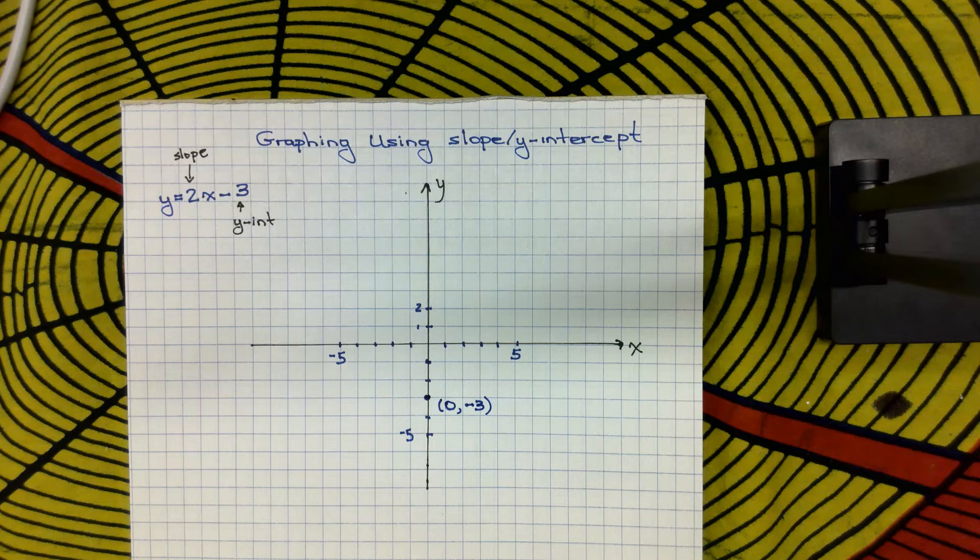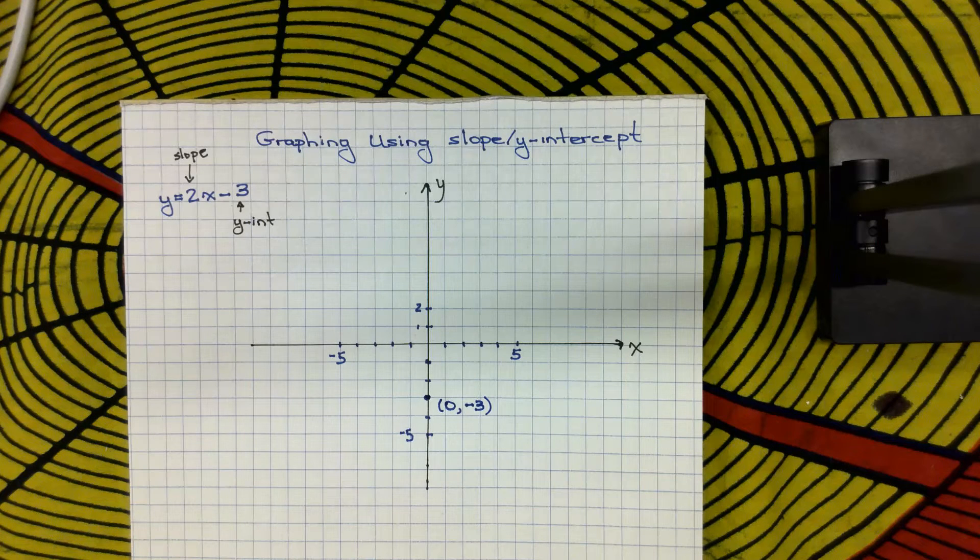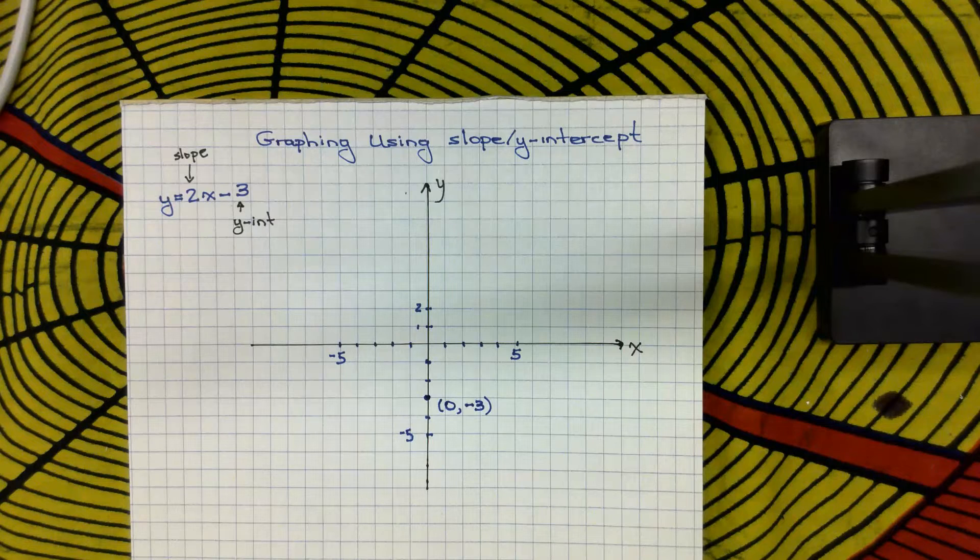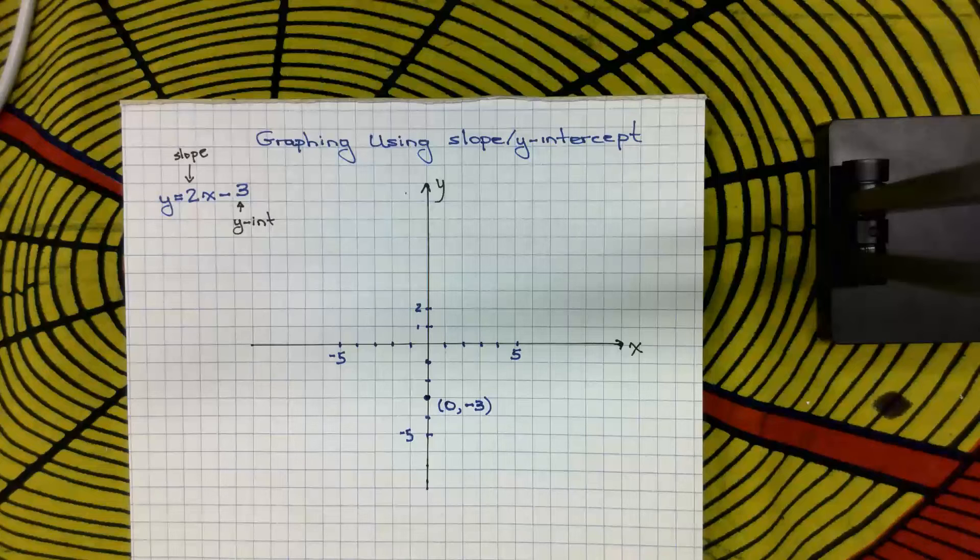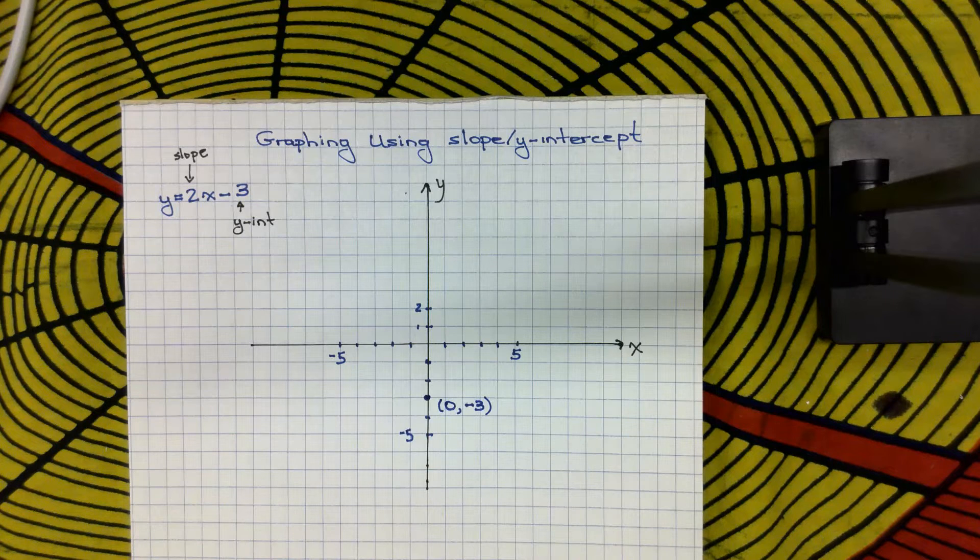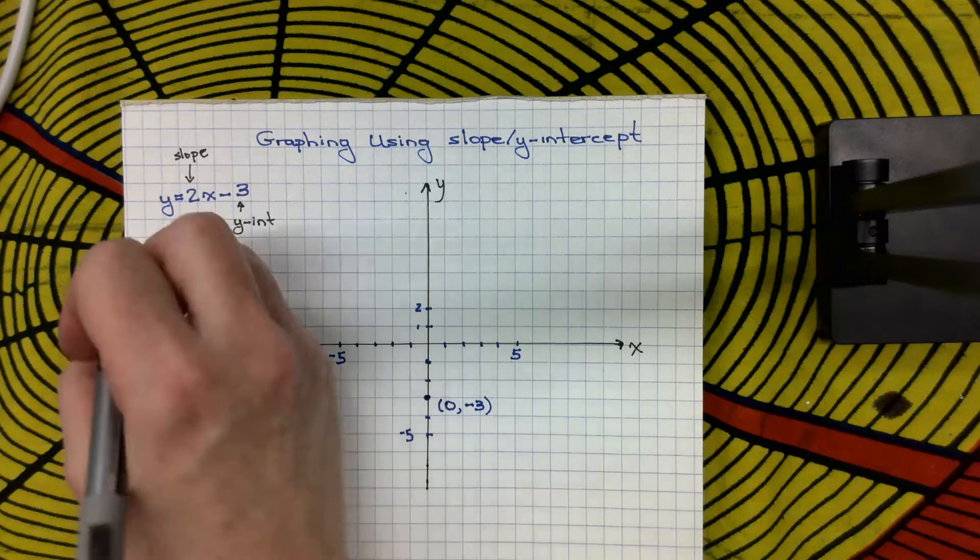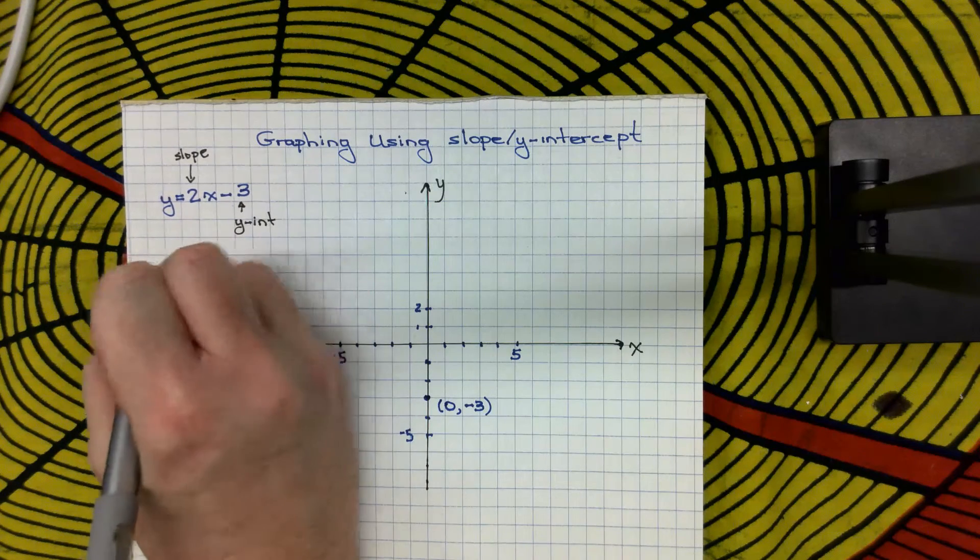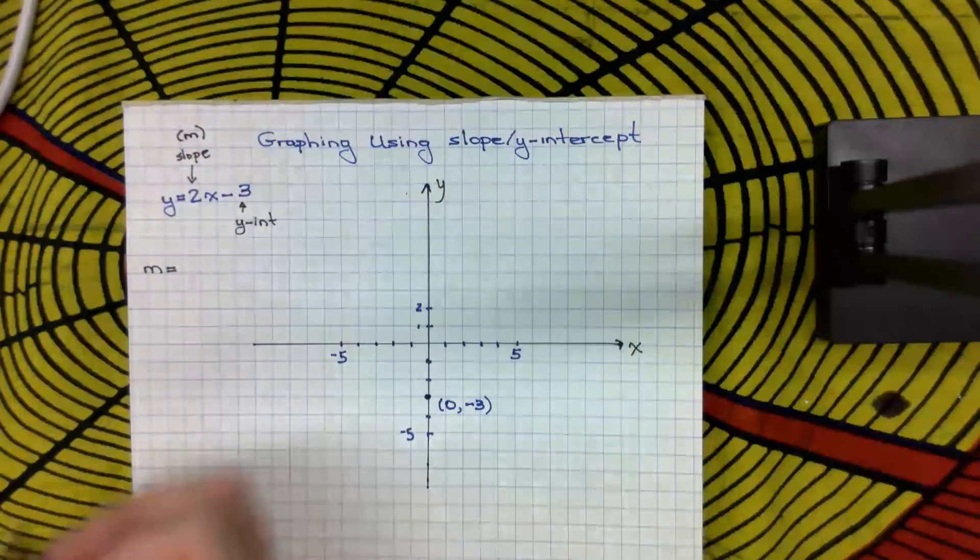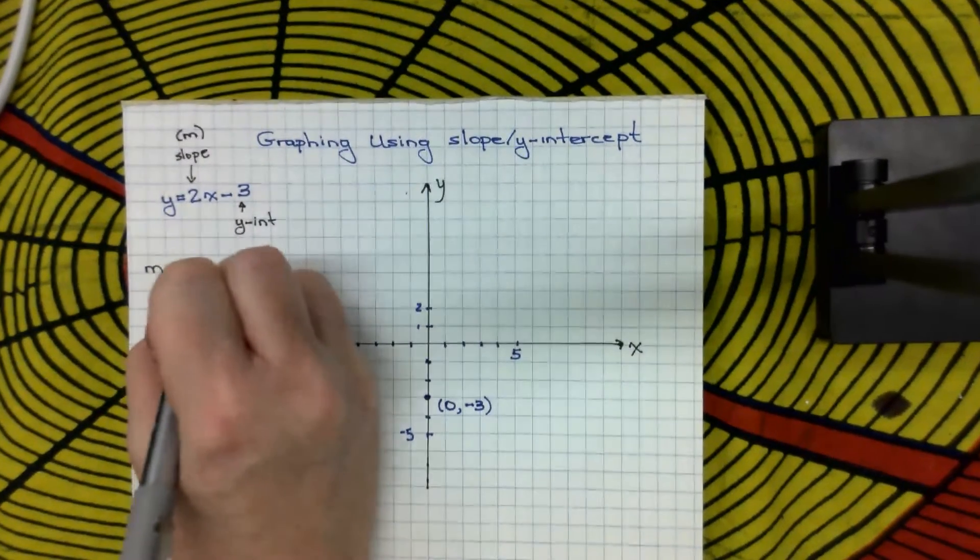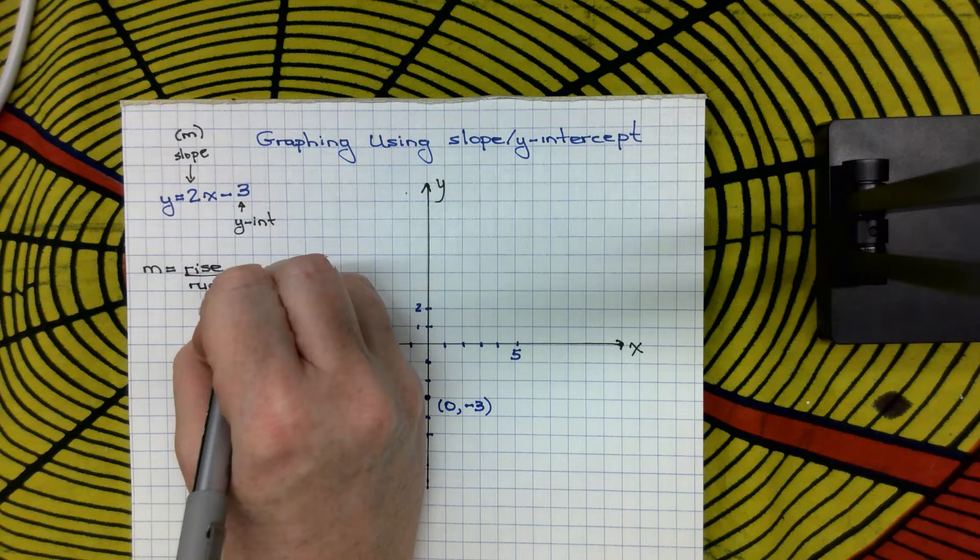Now what I want to do is I need to find out some other points on the line. So this is where my slope comes in, because my slope tells me how steep the line is, so how much I rise vertically and how much I run horizontally. So in this case, when I take a look here, my slope is actually equal to 2. Well, my slope, which the letter that I use to represent slope is m, is equal to rise over run.